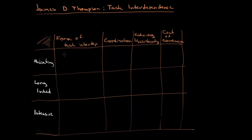Let's begin with the most intuitive thing: the form of task interdependence, meaning how the flow of our product or service moves through our company. In the mediating type, it is the most simple you can imagine. There is some kind of task that comes into our company, an employee processes it, and then it comes out — very simple, something in and something out.